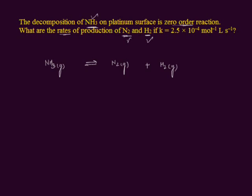We balance this equation. On the right side there are two nitrogen atoms, and on the left side there is only one nitrogen atom. That is why I put a coefficient of two here — nitrogen atoms are now balanced. On the left side there are six hydrogen atoms, and on the right side there are only two hydrogen atoms, that is why I put a coefficient of three. Now hydrogen atoms are balanced. This is a balanced equation.